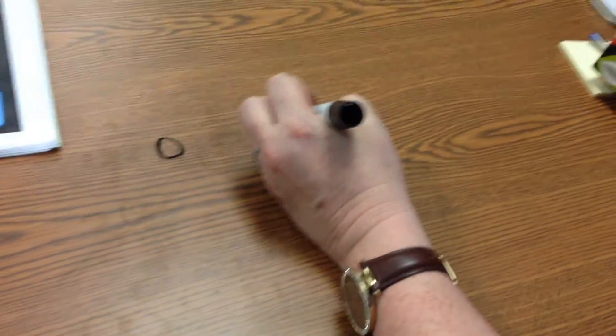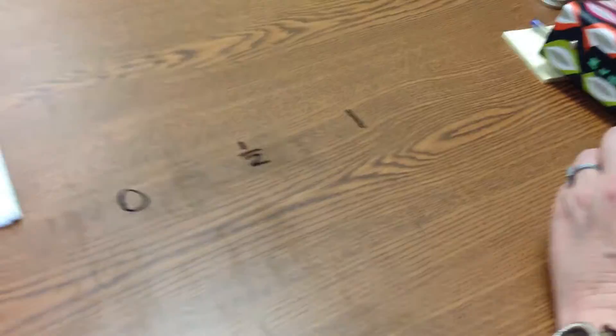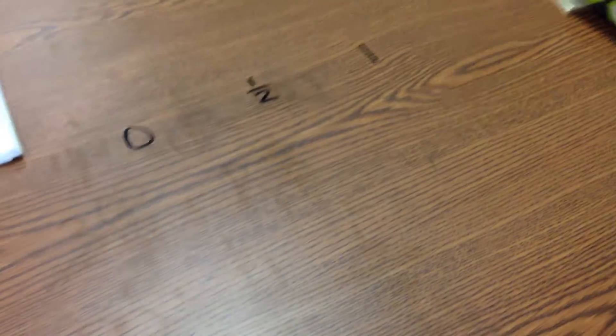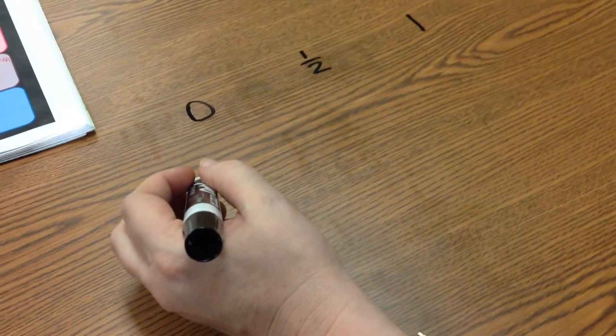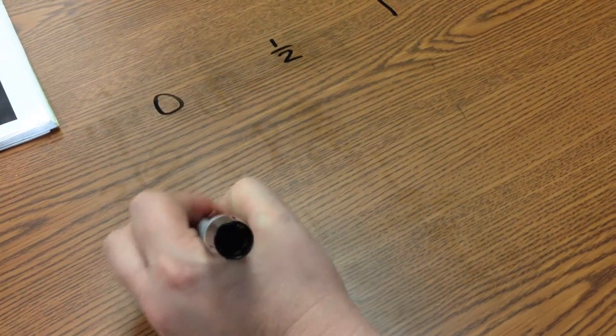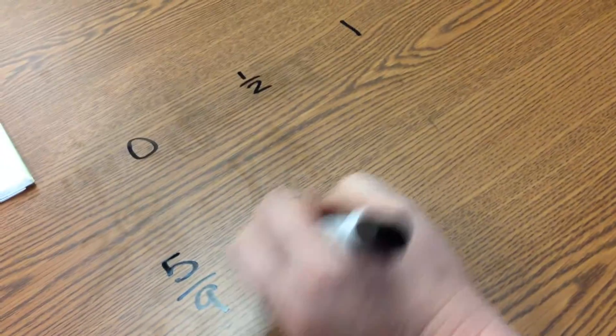Is it closest to zero, one-half, or one? We'll look at number two on page 253 under Sharon's Show. I'll do a couple of these as examples. The first one we have is five-ninths minus three-eighths.